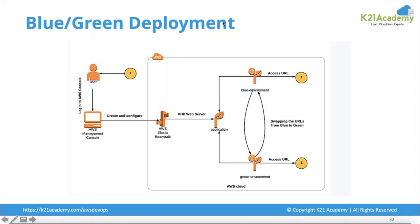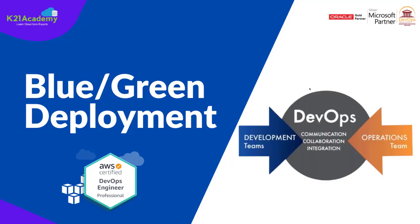Blue-green deployment can be achieved by different deployment services or platform-as-a-service offerings like Elastic Beanstalk. In short, you can achieve blue-green deployment very easily on AWS. That was our expert from Team K21 Academy.